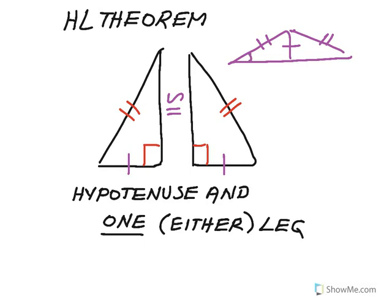You would have these two angles congruent, giving you an Angle-Angle-Side or Side-Angle-Side congruence. So with the hypotenuse and one leg — it doesn't matter which of the two legs — if those are equal, we have congruent triangles.